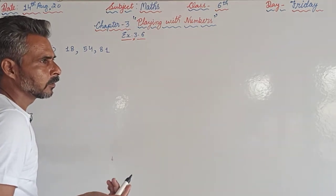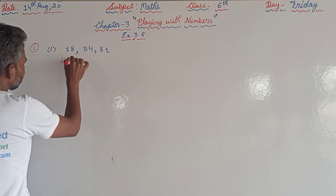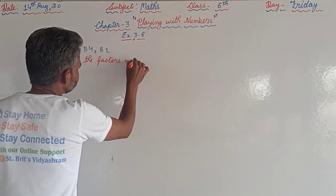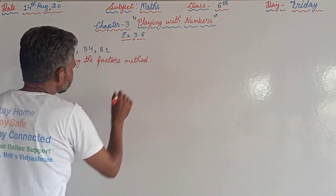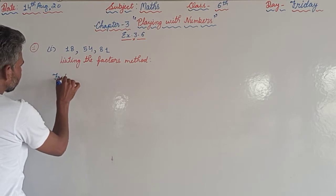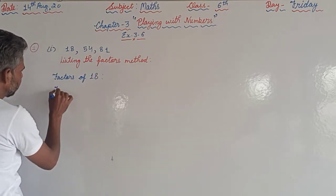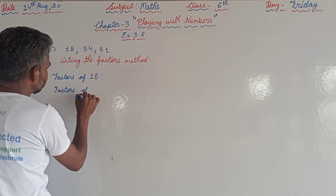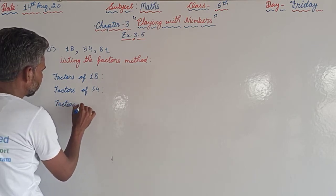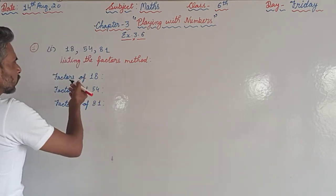Yesterday we discussed the listing the factors method. So the name of this method is the listing the factors method. In this method, we are first of all supposed to list the factors of these numbers — factors of 18, factors of 54, and factors of 81.